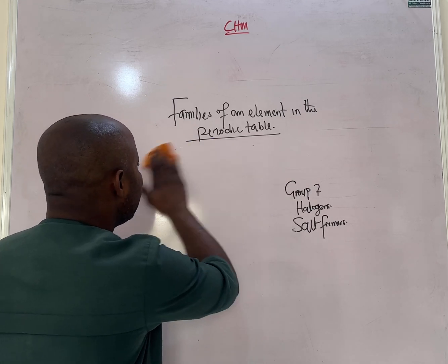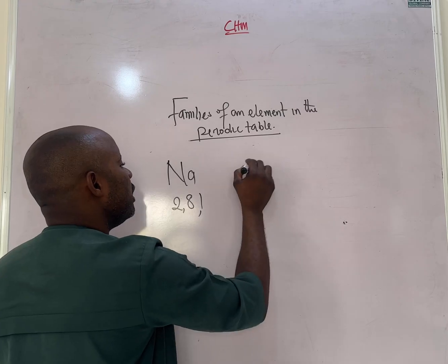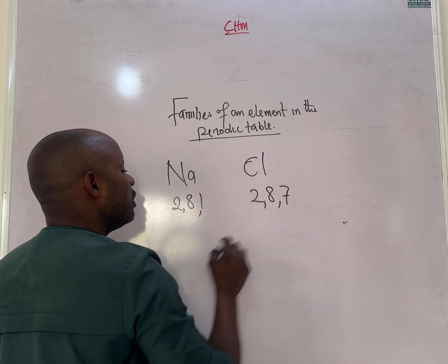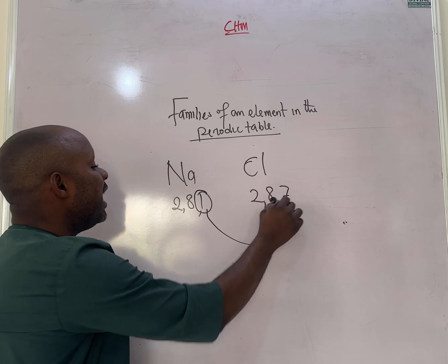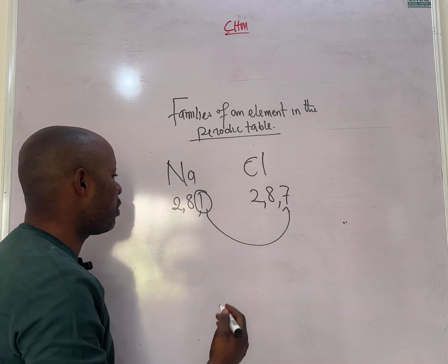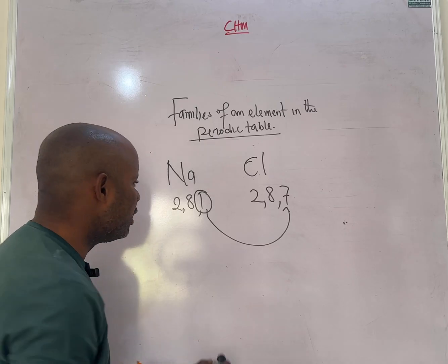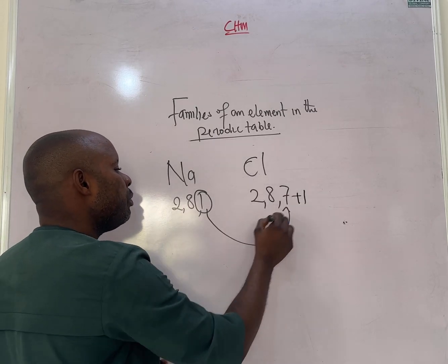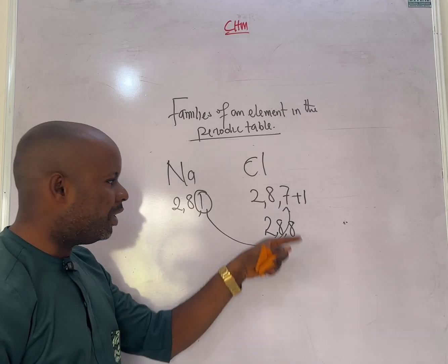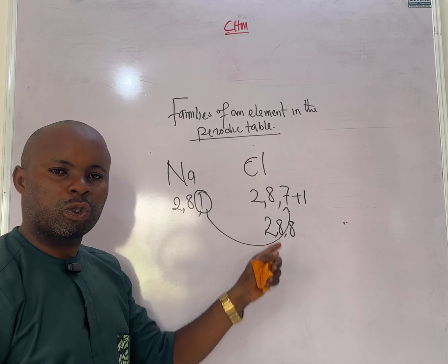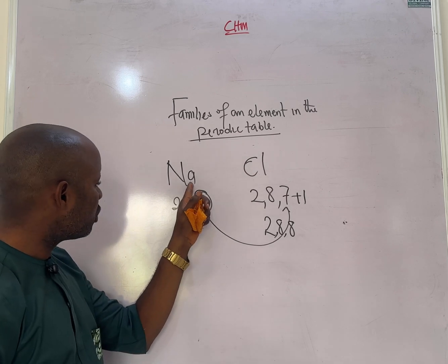For instance, sodium has the configuration 2,8,1 and chlorine has 2,8,7. These two elements react vigorously when they come into contact because sodium has the one electron that chlorine needs to complete its octet. In any chemical reaction, sodium and chlorine will react very vigorously, transferring that one electron to chlorine without delay.